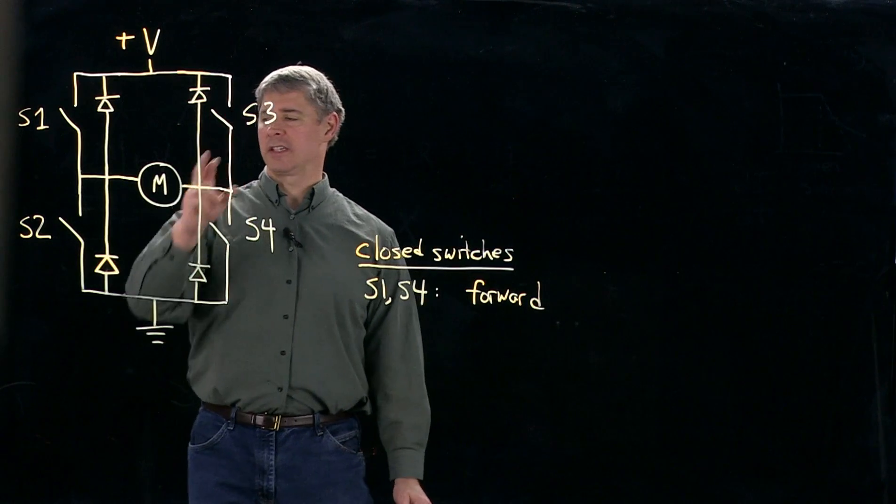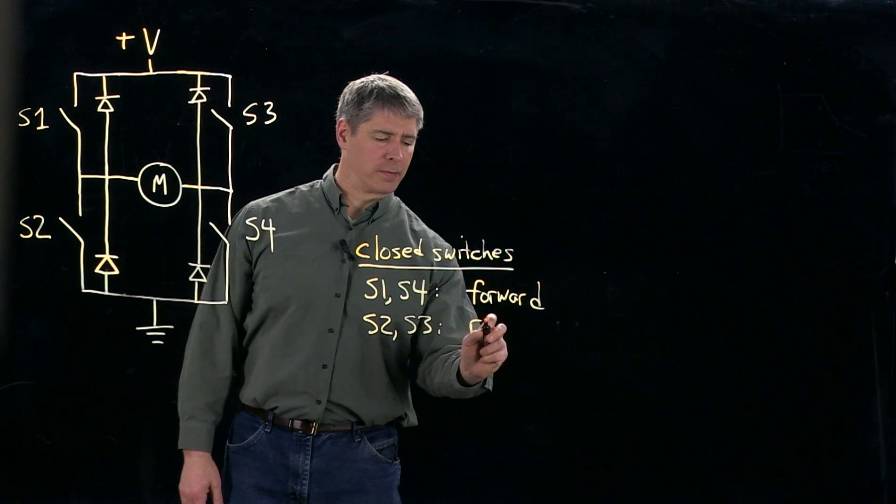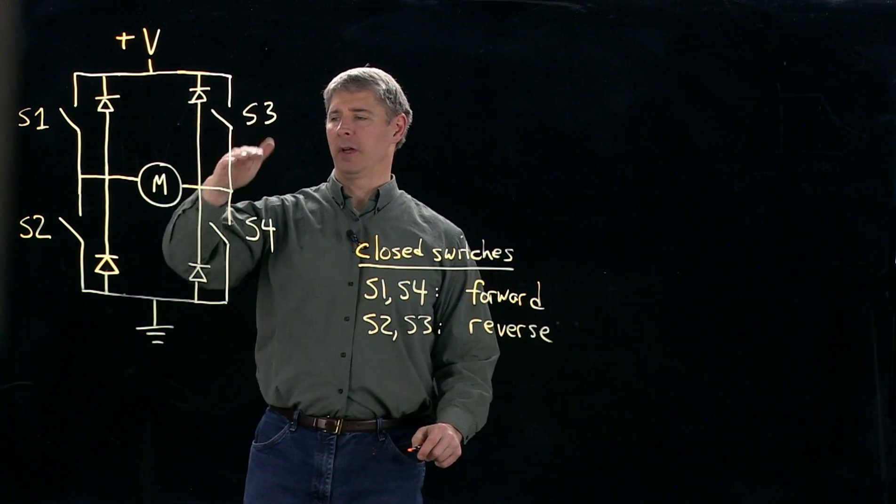On the other hand, if I have S3 and S2 closed, then that's reverse motion. The current's going to flow here, through there, down through this switch to ground.